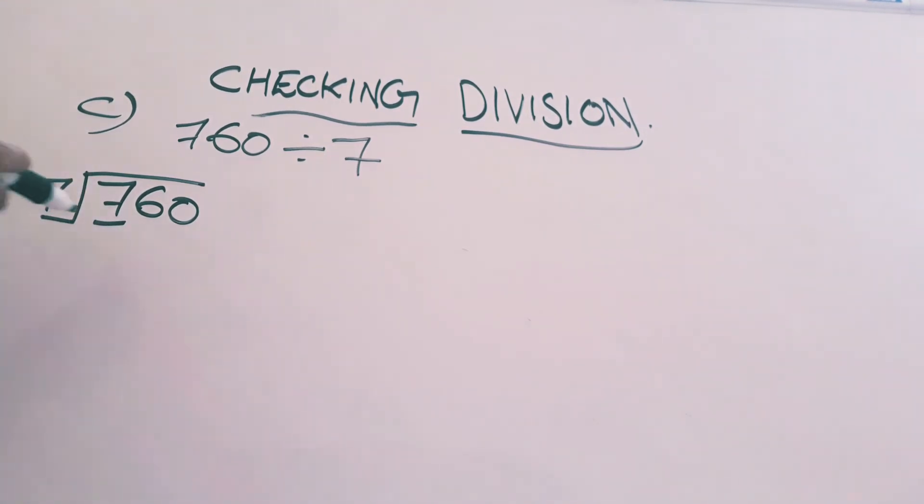760 divided by 7. Underline first number in dividend. I told you, underlining is not at all compulsory. To avoid confusion only, we are underlining. In 7th table, 7 is there. 1 time, 7. Write here. Multiply. 1 into 7 is 7. Do minus, 7 minus 7 is 0.